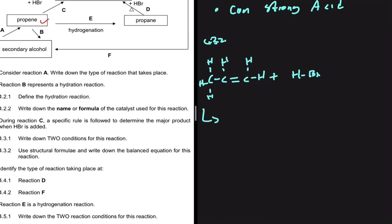The double bond is going to break, and either the H or the Br will come to the second carbon, with the other going to the first carbon. You need to know where to place the Br — placing it at the wrong location costs a mark. The rule for that is Markovnikov's rule: the hydrogen goes where there are already more hydrogens.